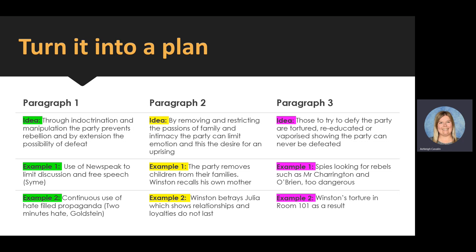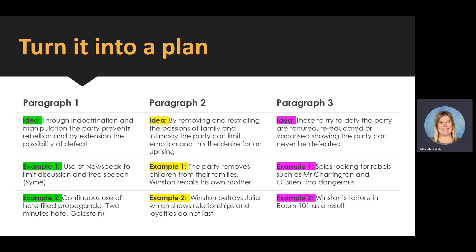In my third paragraph, I'm going to talk about torture. Those who try to defy the party are tortured, re-educated, or vaporized, showing the party can never be defeated. I'm going to talk about the spies, the fact that people are out there looking for rebels such as Mr. Charrington and O'Brien, making rebellion too dangerous. But also I'm going to talk about Winston's final torture and defeat in Room 101.